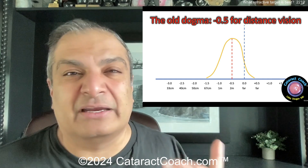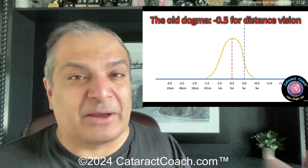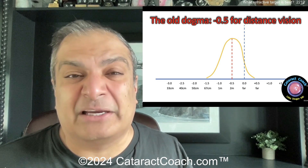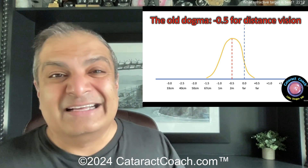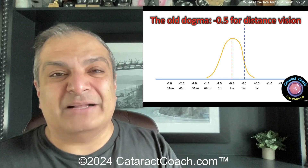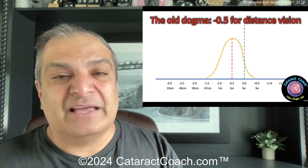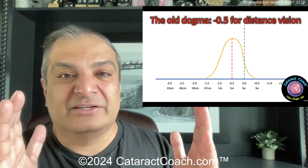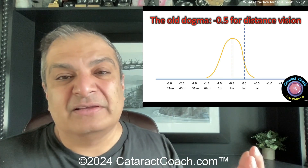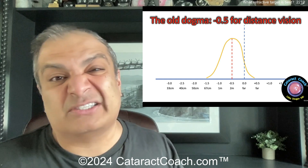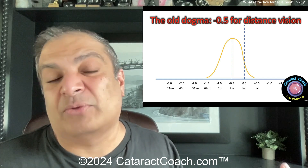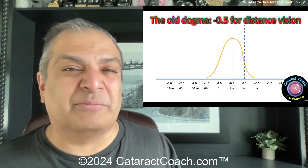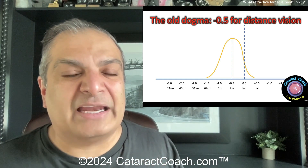Now we're in the era of using machine learning and artificial intelligence to get even better outcomes. Back many years ago, refractive predictability was less. If you look at the bell curve distribution of patients from the old dogma days, it was a very wide bell curve. By aiming for minus 0.5 you had a little more predictability, but patients could still end up quite myopic — minus one or more — or even still a little hyperopic.